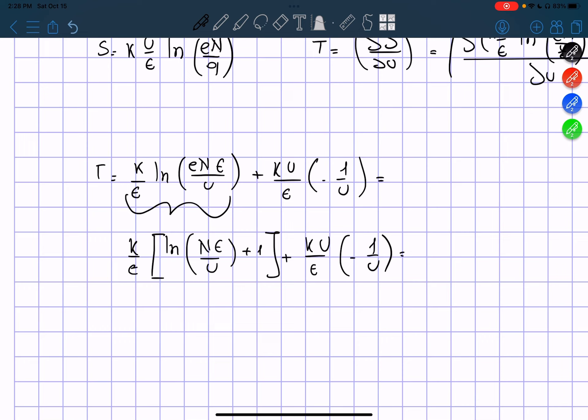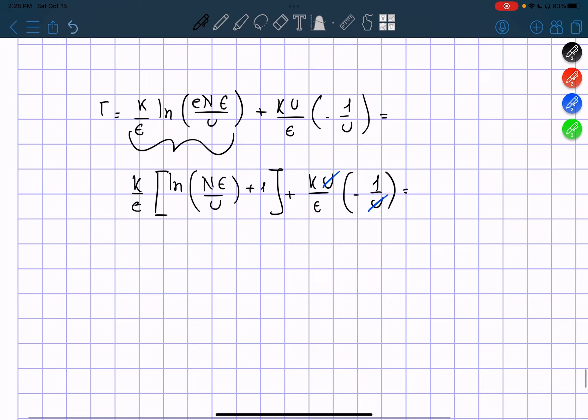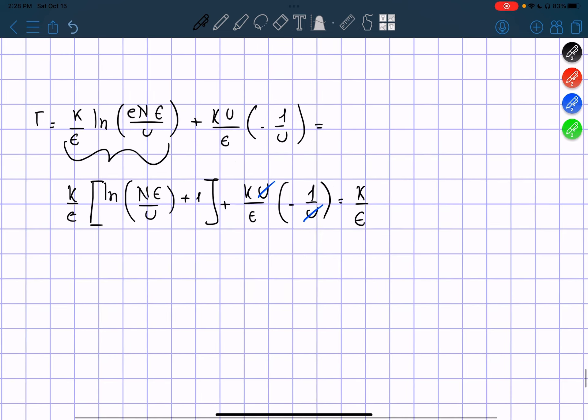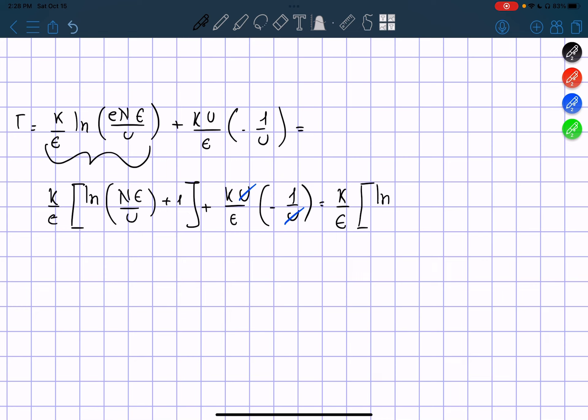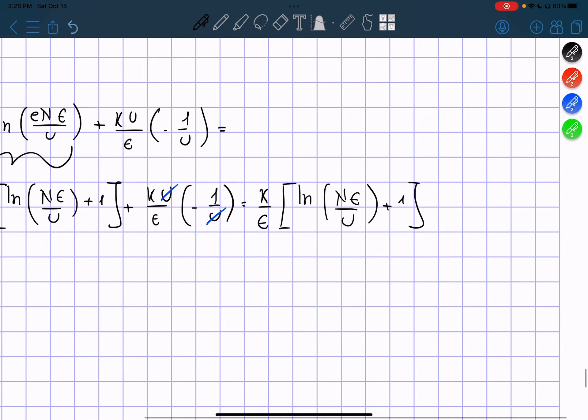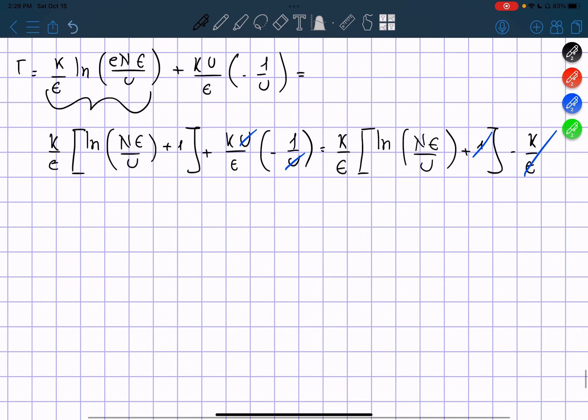So now we can collect what we have. We're going to have these two cancel each other out. And we obtain that it's equal to K divided by the constant times ln of N times the constant divided by U, plus 1, minus K divided by the constant. So these two cancel each other out. And we obtain that it's equal to K divided by the constant times ln of N times the constant divided by U.